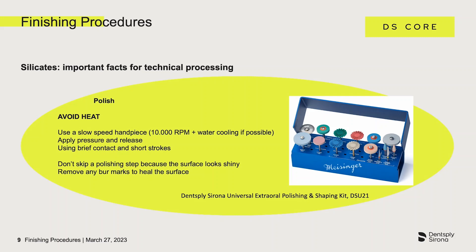If the silicate ceramic is only polished following the grinding process, it is very important that heat development on the material surface is avoided. Whenever possible, a handpiece with water cooling should be used. If this is not possible, it is an option to place a vessel of cold water at the workstation and cool the ceramic between individual polishing steps. The contact pressure should never be too strong and the number of rotations should not exceed 10,000 rotations per minute.